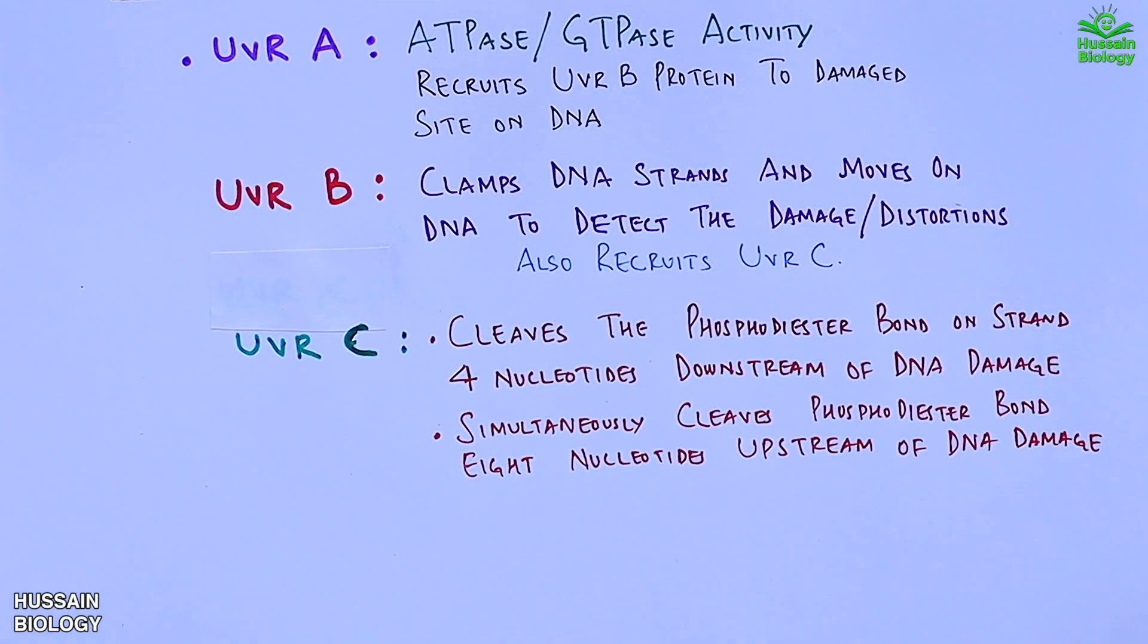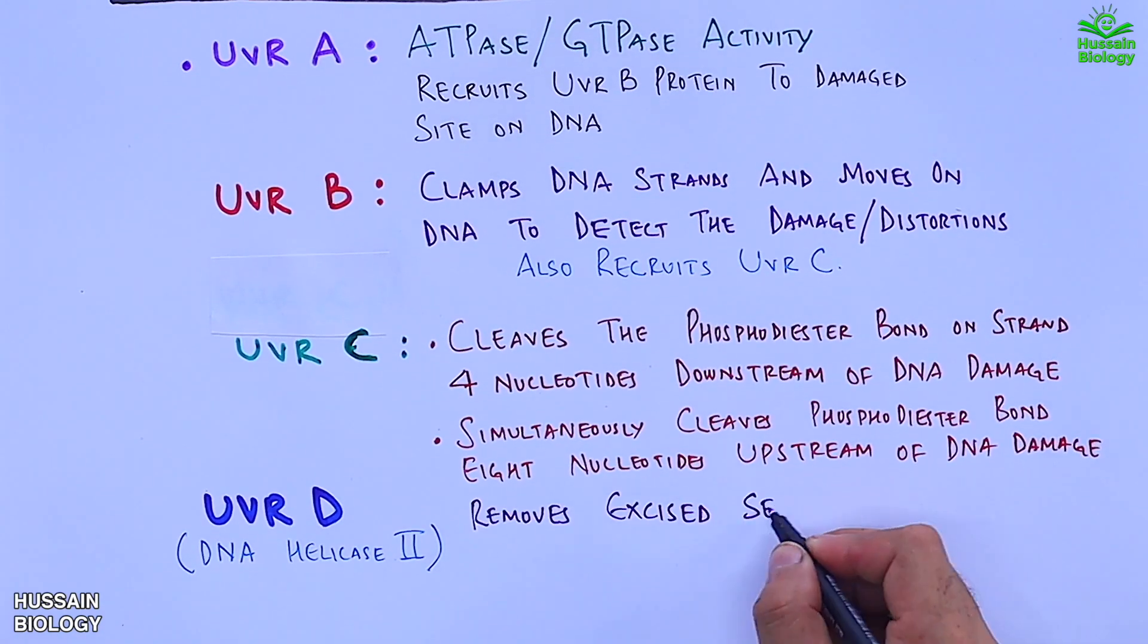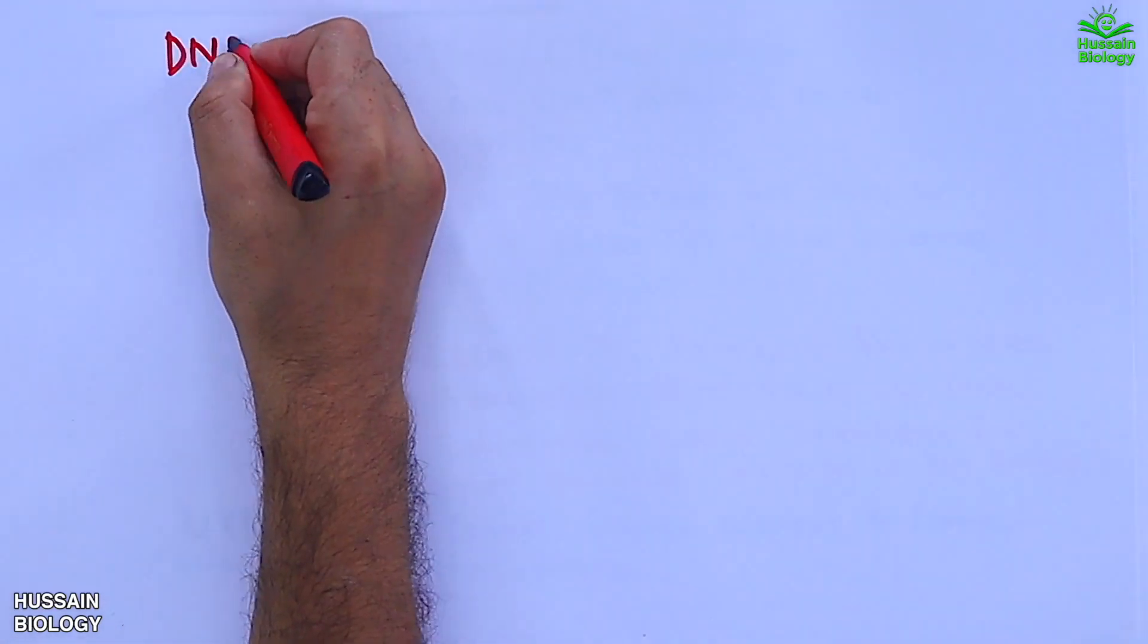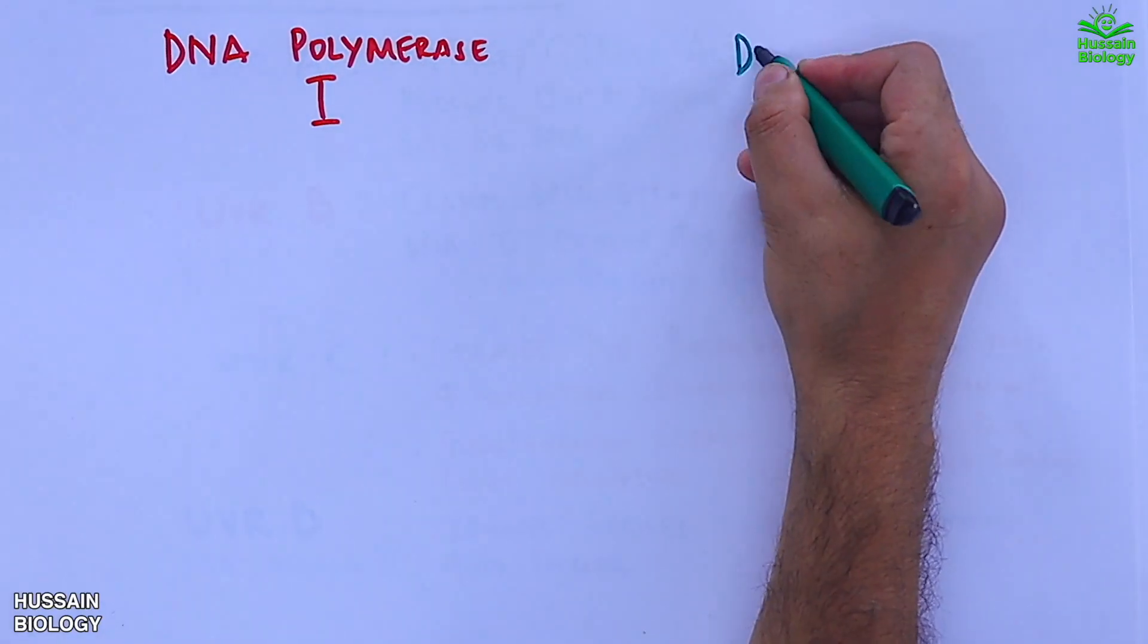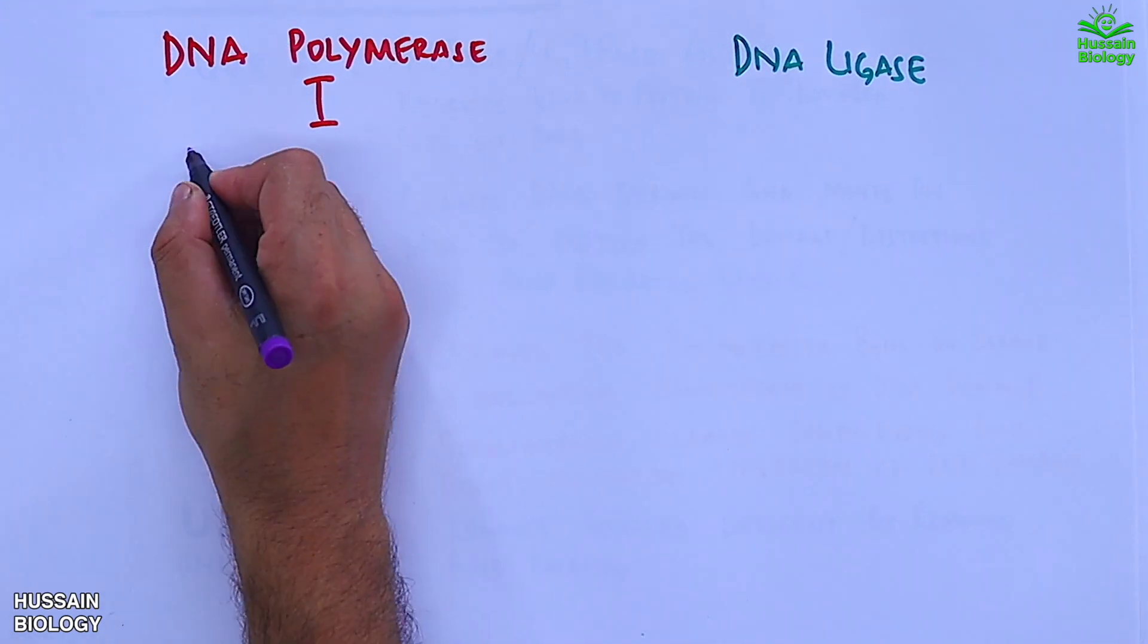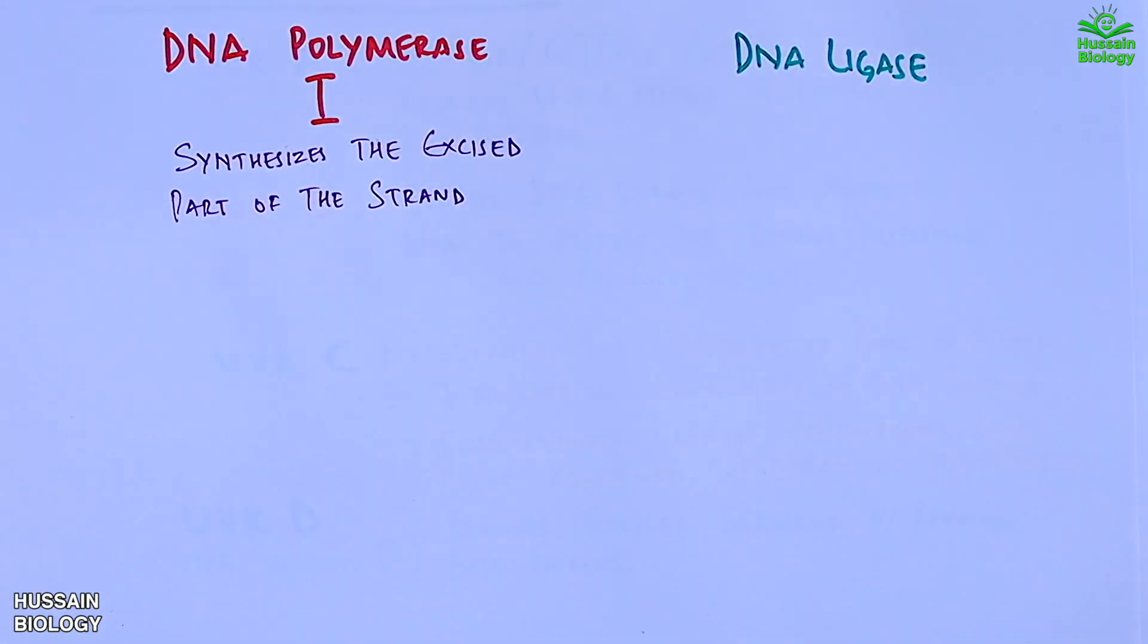The fourth protein is UVR D which is helicase 2. It removes the excised segment by removing the base pairing. Then we have DNA polymerase 1 and DNA ligase enzyme. DNA polymerase 1 synthesizes the excised part of DNA and ligase ligates the newly synthesized segment within the strand.